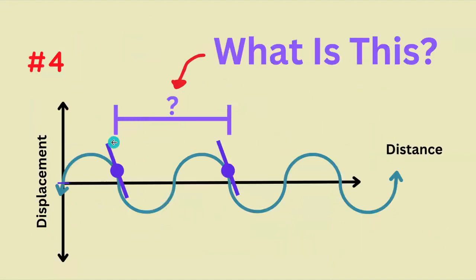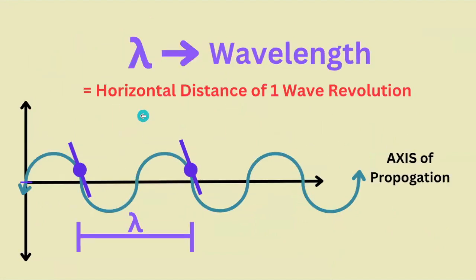What is this? It's a wavelength — the horizontal distance associated with one repetition of the wave.